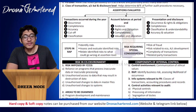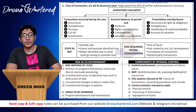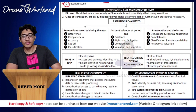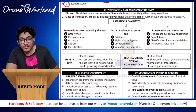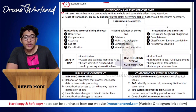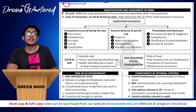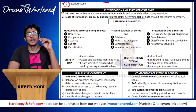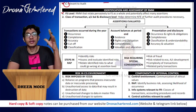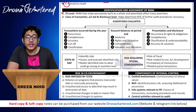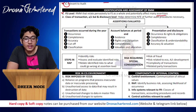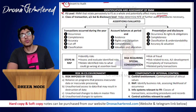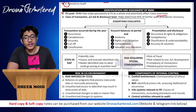Next is identification and assessment of RMM at two levels. The first is financial statement level - risk of material misstatement that relates pervasively to the financial statements as a whole. Pervasively means as a whole, that is entirety, everything. So risks that relate pervasively to the financial statement as a whole will potentially affect many assertions.